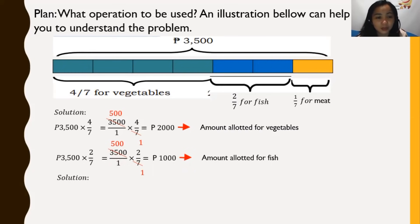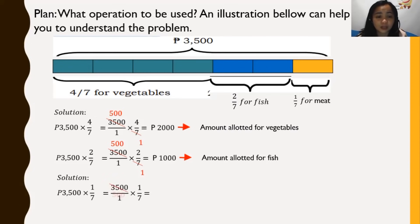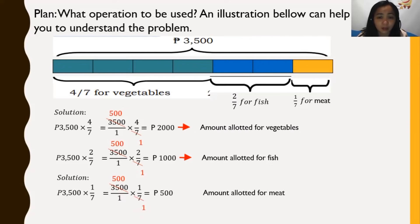Now let's compute for meat. We have 3,500 times 1/7. That becomes 3,500 over 1 times 1/7. Cancel to get 500 times 1, which is P500 — the amount allotted for meat. That is how she budgeted her P3,500.